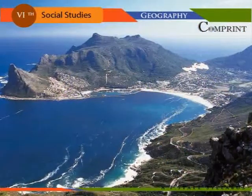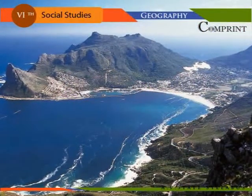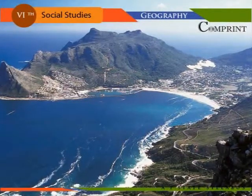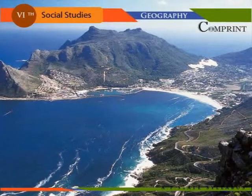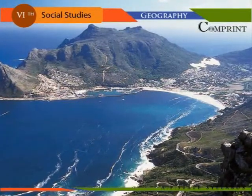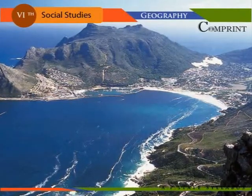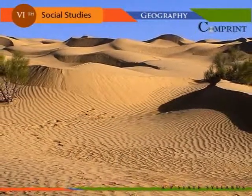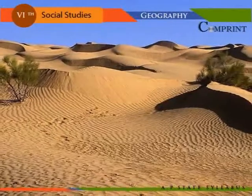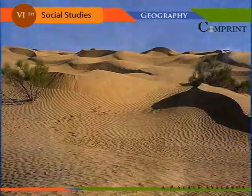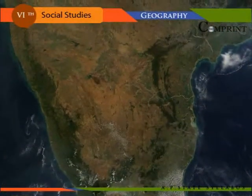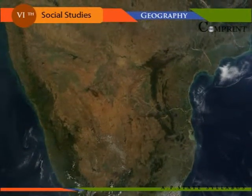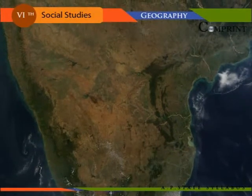A piece or point of land extending beyond the adjacent coast into the sea is known as a Cape. The southern tip of Africa is known as the Cape of Good Hope, and the southern tip of India is known as Cape Comorin. A dry sandy region with little rainfall and extreme temperatures is known as a desert — for example, the Sahara Desert in Africa and the Thar Desert in India. Land bordering the sea is known as the sea coast — for example, the East Coast and West Coast in South India.